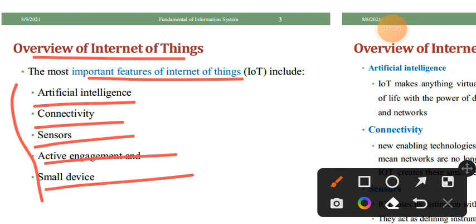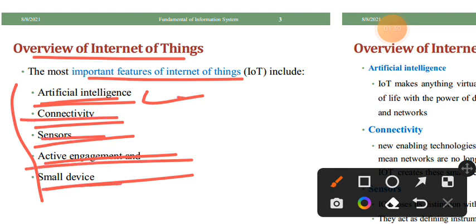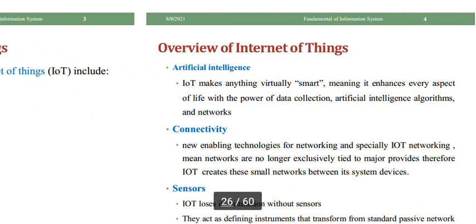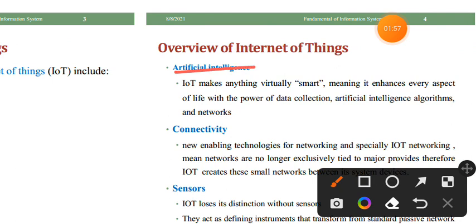Artificial intelligence is an important feature of Internet of Things — IoT devices have been built with artificial intelligence. Other features include connectivity, sensors, active engagement, and small devices. This is the Internet of Things overview. How does the Internet of Things work? It is closely associated with artificial intelligence. What is the Internet of Things? It involves artificial intelligence.